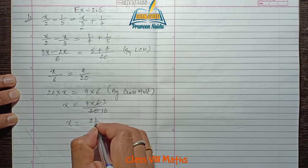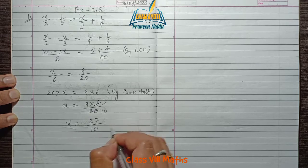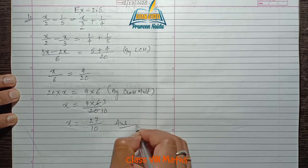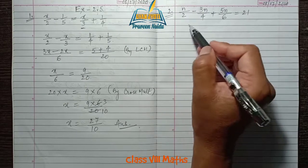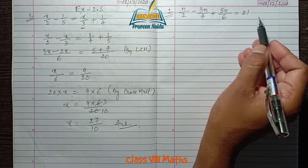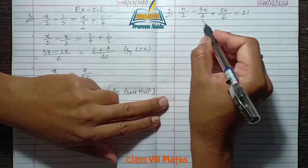The answer is 27/10. Next question, number 2: n/2 - 3n/4 + 5n/6 = 21. On the left hand side, all three terms are like terms.